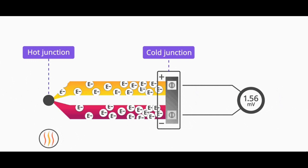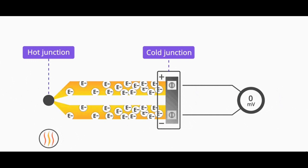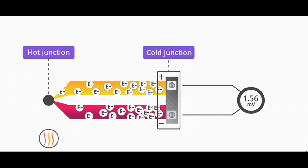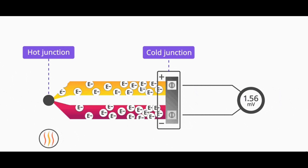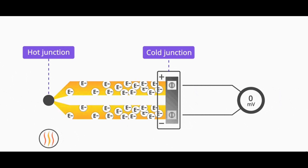A thermocouple sensor consists of two different metal wires, usually made of different alloys, that are joined together at one end to form a measurement junction. The other ends of the wires are connected to a measurement device, such as a voltmeter or a temperature controller.